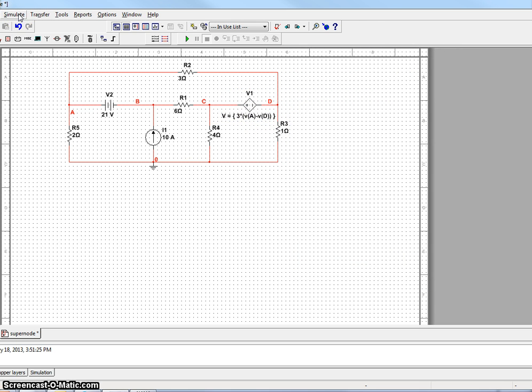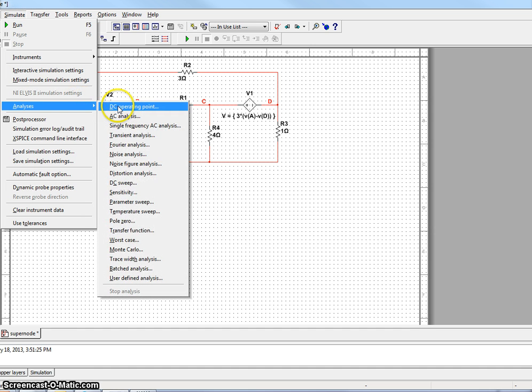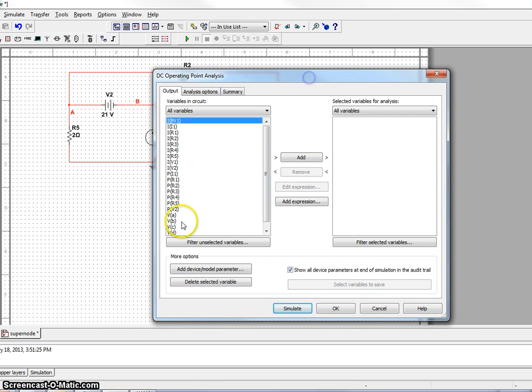We are going to run a DC analysis. So go to simulate, analysis, DC operating point. And we want to observe the voltages at node A, B, C, and D. So highlight all four of them. You can hold the control button as you're doing it. Hit add. And now let's say simulate.